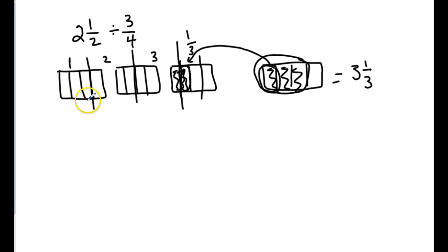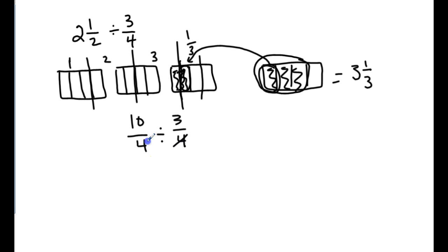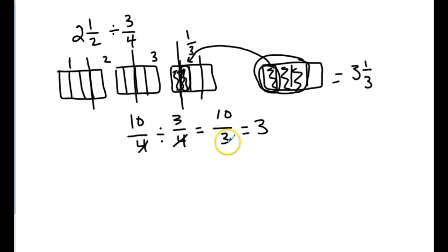Let's look at it algebraically. Two and a half becomes ten-fourths divided by three-fourths. The common units drop away, and this becomes ten divided by three, which is improper. How many threes fit into ten? Three. Three times three is nine, so ten minus nine leaves a remainder of one — giving us three and one-third. Same answer.